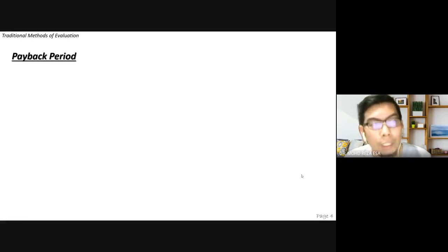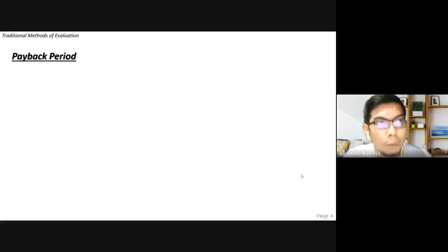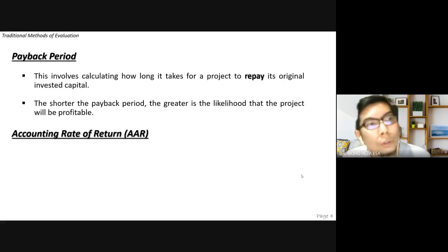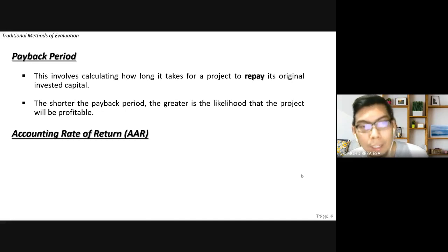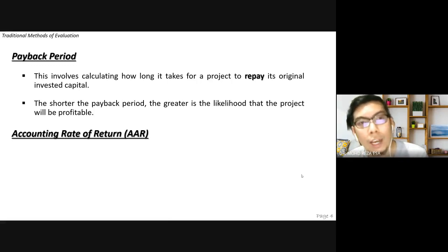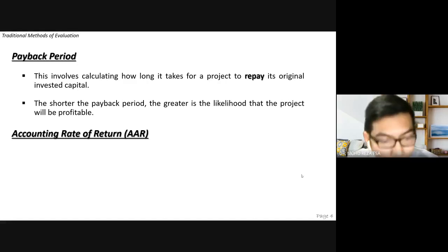The first method under traditional evaluation is the payback period. It involves calculating how long it takes for a project to repay its original invested capital. We are not looking at how long to get profit — we are looking at how long it takes to get your capital back. That's what we call payback period.